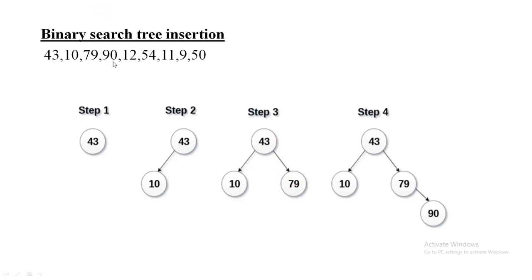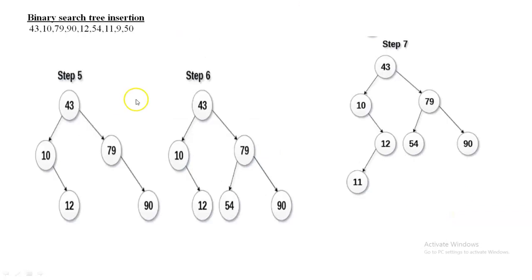The next node is 90. Always start comparison with the root node regardless of tree level. Comparing 90 with 43 — it is greater, so go right. On the right side, 79 is already present. Comparing 90 with 79 — 90 is greater, so 90 is inserted as the right child of 79. The next node is 12; compare 12 with the root 43.